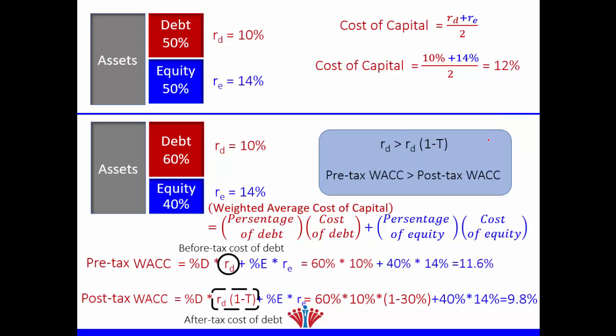We can apply the same concept to WACC: the pre-tax WACC will always be bigger than the post-tax WACC, because post-tax WACC uses the after-tax cost of debt while pre-tax WACC uses the before-tax cost of debt. Pre-tax WACC will equal post-tax WACC only when there are no taxes.